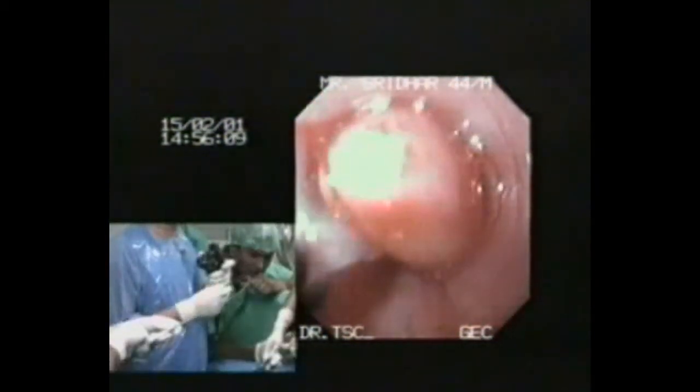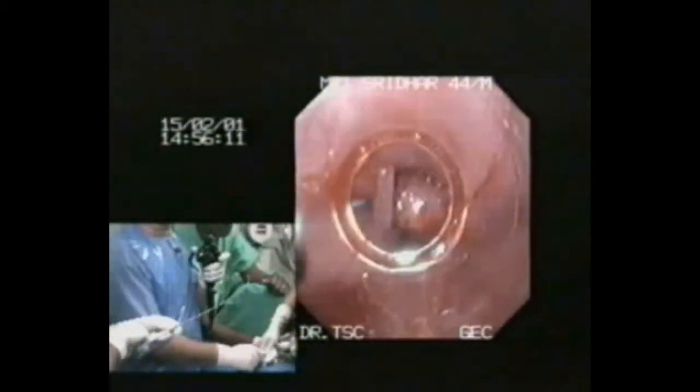The inner cylinder is placed over the varix and gently the varix is sucked into the inner cylinder till a red out is seen, and now the endo loop is deployed to isolate.